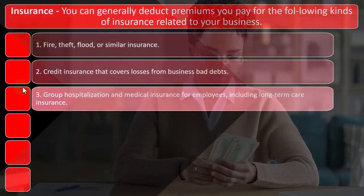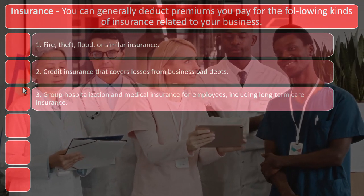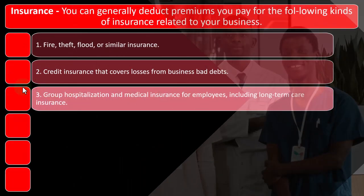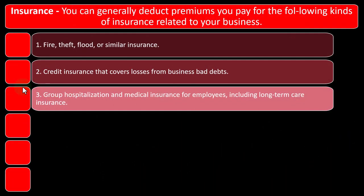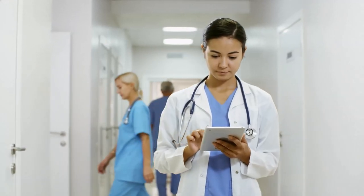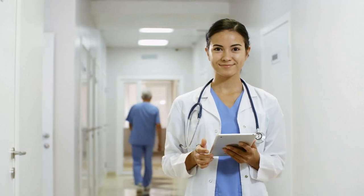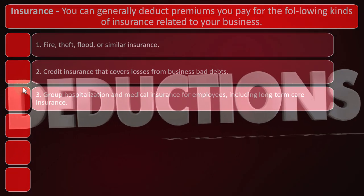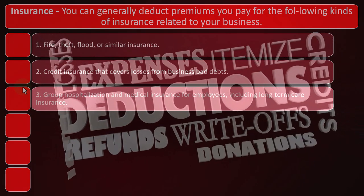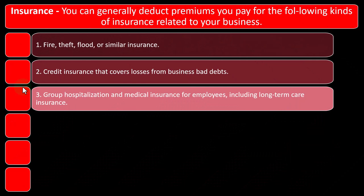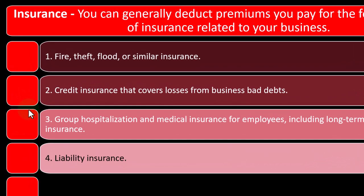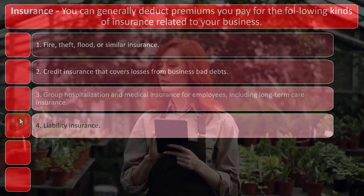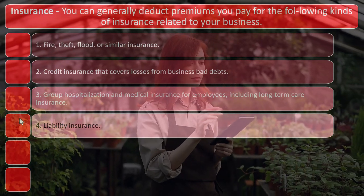Number two is group hospitalization and medical insurance for employees, including long-term care insurance. As a Schedule C business, if you don't have employees, this wouldn't apply here, although you might deduct medical insurance for yourself as an above-the-line deduction adjustment to income. If you do have employees, you can deduct group hospitalization and medical insurance for them, including long-term care. Liability insurance is probably the most common type for any kind of business — even if you don't have inventory or a storefront, you might carry liability insurance.